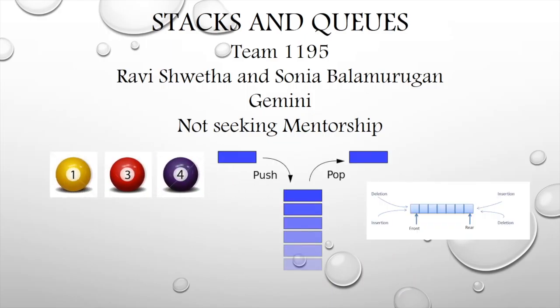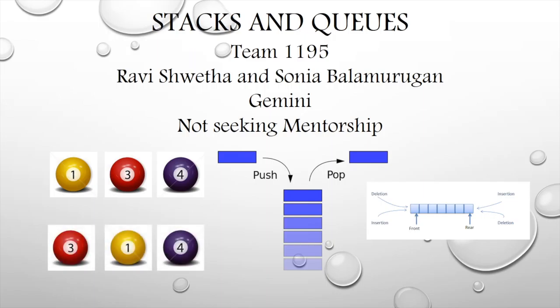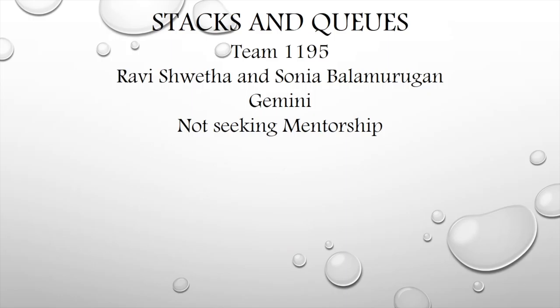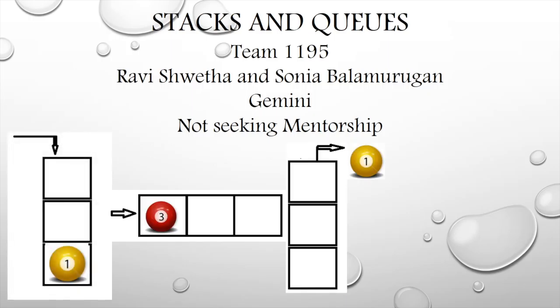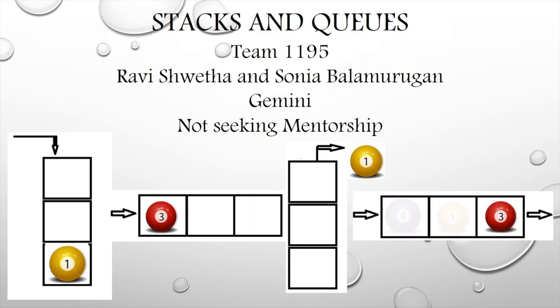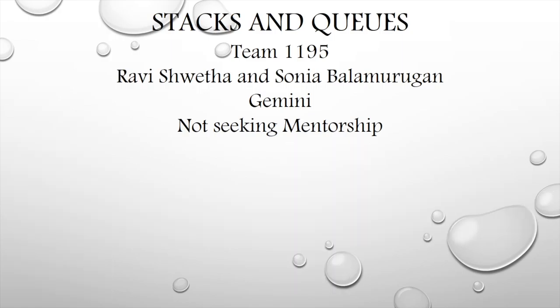Let's explain with an example. Say there are three balls numbered 1, 3, and 4 entering in order, provided with a stack and a queue. The win condition is to arrange them in order 3, 1, 4. A solution would be to stack the 1, enqueue 3, pop 1 out of the stack and enqueue it behind 3, and then enqueue the 4, followed by dequeuing all 3, which ends the puzzle.